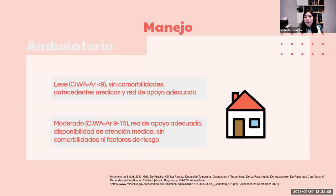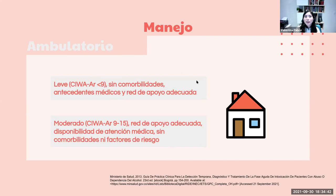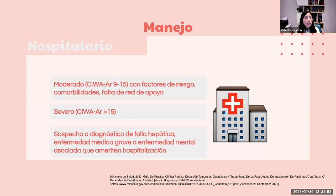El manejo ambulatorio se indica si hay síndrome de abstinencia leve (CIWA-Ar menor a 9), sin comorbilidades ni antecedentes médicos y con red de apoyo adecuada. El manejo ambulatorio moderado aplica para CIWA-Ar de 9 a 15 con red de apoyo adecuada, disponibilidad de atención médica y sin comorbilidades ni factores de riesgo. El manejo hospitalario se indica si hay CIWA-Ar de 9 a 15 con factores de riesgo, comorbilidades o sin red de apoyo, o si hay CIWA-Ar mayor a 15. También se hospitaliza si hay sospecha o diagnóstico de falla hepática, enfermedad médica grave o enfermedad mental asociada.